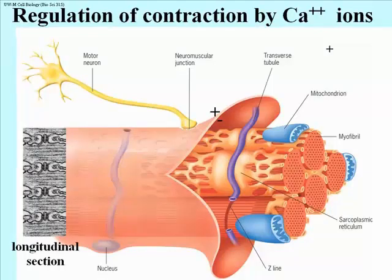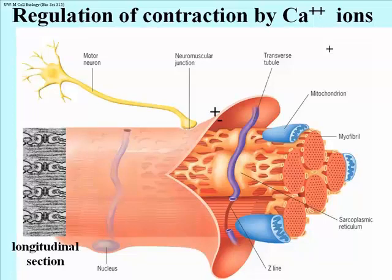The cartoon shows a motor neuron — a neuron that innervates a muscle cell — attaching to this muscle at a neuromuscular junction. We're going to see an animation of what happens: a nerve impulse moves down the axon to the nerve terminus at the neuromuscular junction, leading to an action potential.